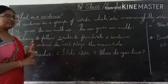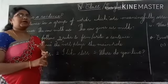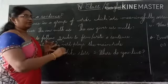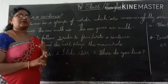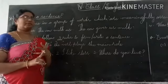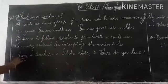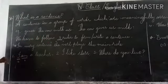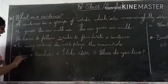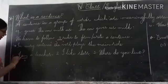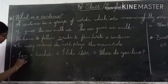We must have subject and verb. We also have to end the sentence with a full stop, or question mark, or exclamation mark. When you start a sentence, we have to start with a capital letter. Every sentence, we have to start with a capital letter.